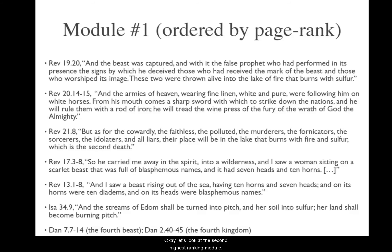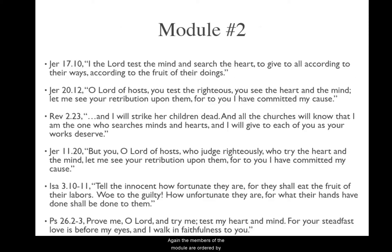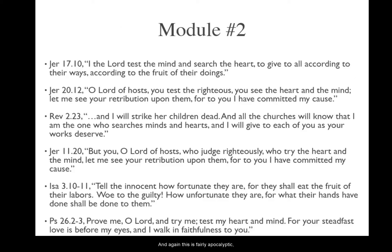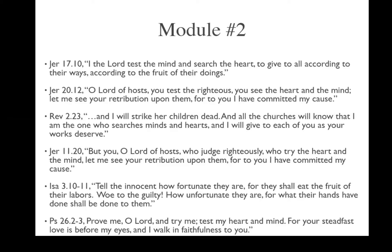Let's look at the second highest ranking module. This one has three verses from Jeremiah and one from Revelation on the top. Again, this is fairly apocalyptic — it's more about retribution, punishment, God's righteousness and judgment. So the first module was about the image of the beast, and this one is about revenge, retribution, and God's judgment. That's what those verses are mostly about.